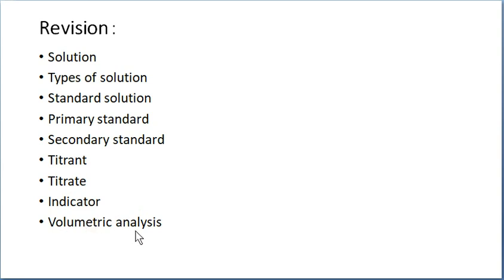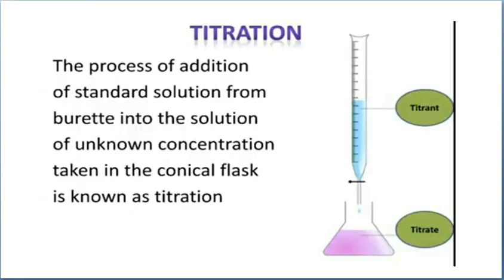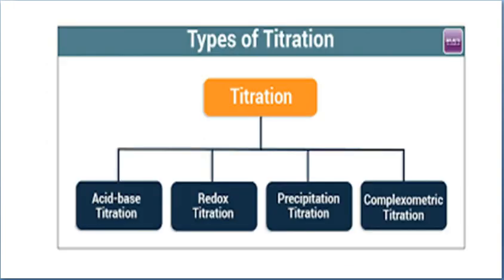Volumetric analysis is used to estimate the amount of substance present in the given solution. Now we are entering into today's class: what is meant by a titration? Titration is the process of addition of a standard solution from the burette into the solution of unknown concentration taken in the conical flask. Today we are going to see what are the types of titration used in volumetric analysis.